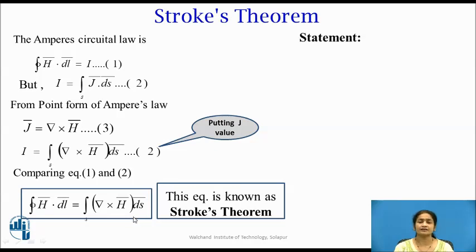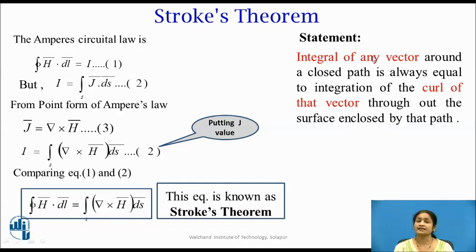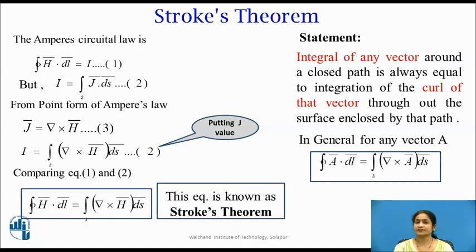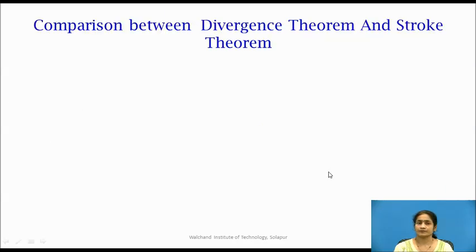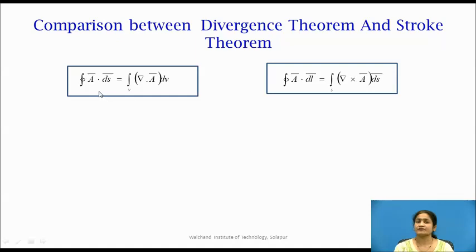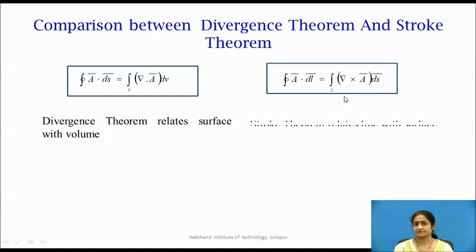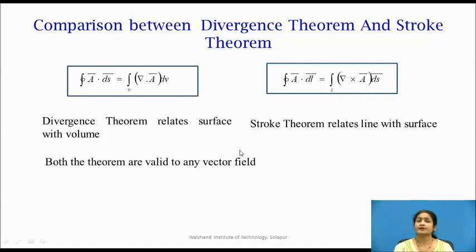In general, Stokes' Theorem states that the integral of any vector across a closed loop path is always equal to the integration of the curl of that vector over the enclosed surface. Comparing with the Divergence Theorem: the Divergence Theorem relates surface integrals to volume integrals, while Stokes' Theorem relates line integrals to surface integrals. Both theorems are valid for any vector field.